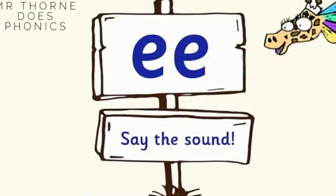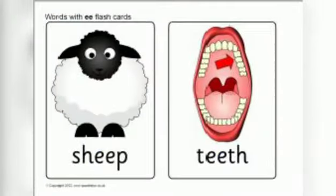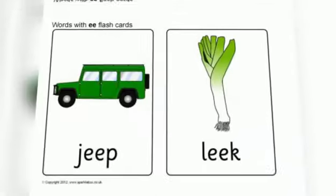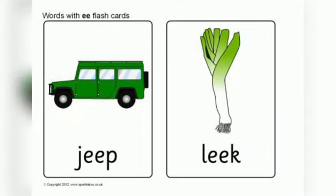Now let's read some more E words. Sheep. We know S and H make the SH sound. SH, E, P — sheep. T, E, E, T, H — teeth. J, E, E, P — jeep.